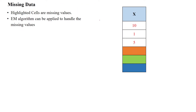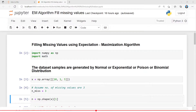The given dataset has six samples. In these, three samples are missing data — these are called missing values. How can we find the missing values for a given dataset using the EM algorithm? For this we are having one experiment.